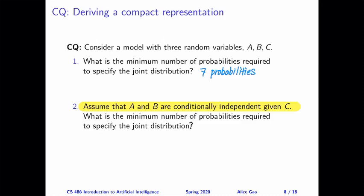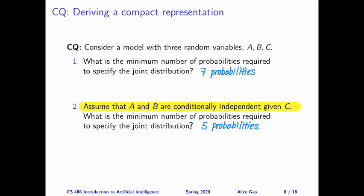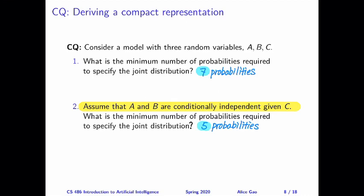The correct answer is that we need 5 probabilities to represent the joint distribution given this conditional independence assumption. Watch the separate video for a longer discussion of how I derive these numbers. The important message here is the same as before: by knowing some conditional independence assumptions, we can use fewer probabilities to represent the same joint probability distribution.